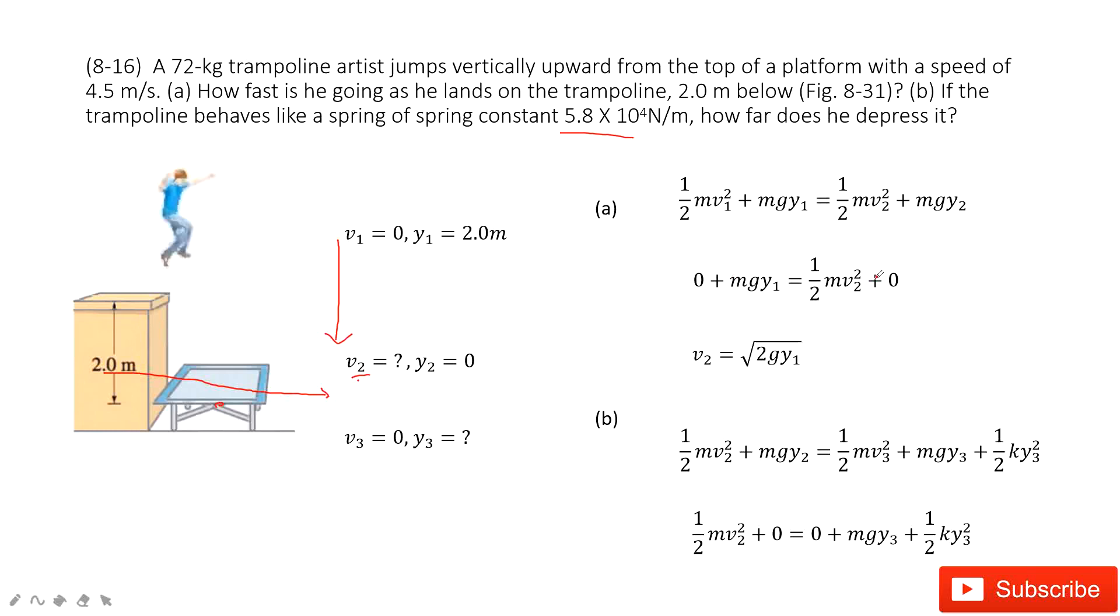And then we can input the known quantities. We find V2 is squared 2gy1. There, we can see 2 is a constant, g is constant, y1 is given. So very easily you can find V2.